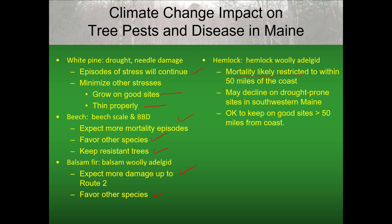For hemlock, mortality is likely to be restricted to about 50 miles of the coast. Within that area, hemlock is most likely going to die out from those forests and be replaced by other species — most likely spruce and fir. Hemlock may also decline on drought-prone sites in southwestern Maine because of warmer temperatures allowing the scales to have higher populations. But it's okay to keep hemlock on good sites if it's greater than 50 miles from the coast. That's the end of the presentation — climate is having an impact on tree pests and disease in the state of Maine, and we really need to manage the forest to allow it to be more resilient and tolerate these stresses occurring in our forests.